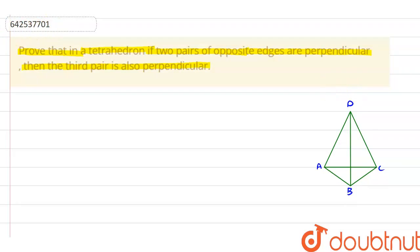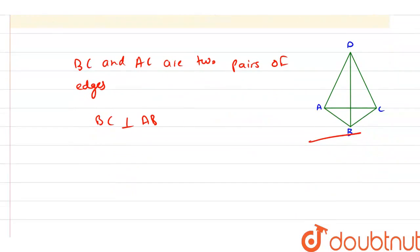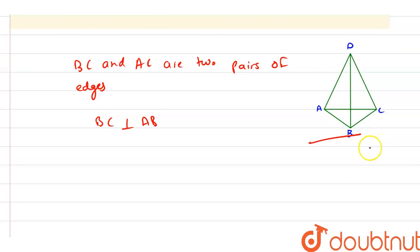Here we have BC and AD are two pairs of edges of the tetrahedron. And also, we have that BC is perpendicular to AD. Both sides are perpendicular to each other.